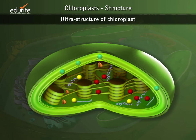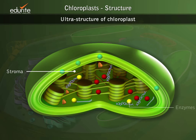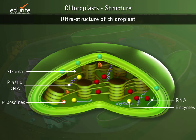The inner membrane encloses a protein-rich ground substance called stroma. The fluid in the stroma contains a host of enzymes, plastid DNA, RNAs, and ribosomes.